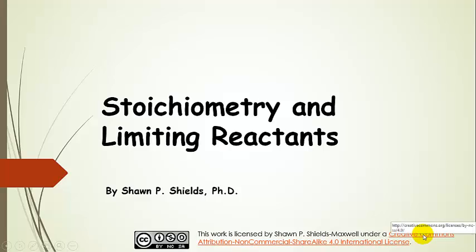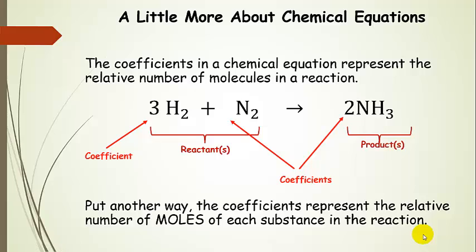Stoichiometry and limiting reactants. Before we get started, let's talk a little bit more about chemical equations. We've seen these before — on this side of the equation, in front of the arrow, we have our reactants. The arrow says 'react to produce,' and here is our product. Of course, we can have more than one product, depending on the specific reaction.